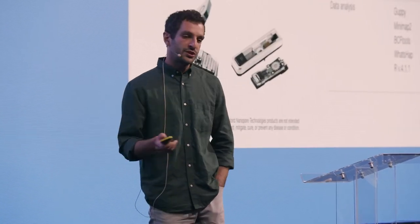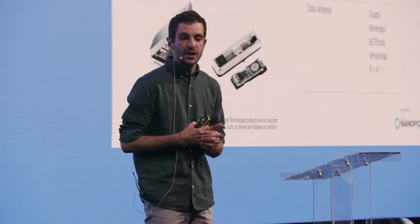For this project, we utilized published whole genome sequencing data to derive two different sets of SNPs: one for subspecies identification — these SNPs are fixed in one subspecies and absent in the others — and another set containing highly heterozygous SNPs across individuals, used for individual identification. To assess the performance on non-invasive samples, we were provided with matched blood, hair, and fecal samples from Twycross Zoo and Aspinall Foundation, on which we tested our primers in the lab.